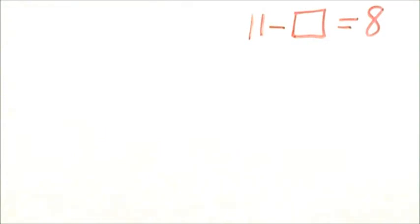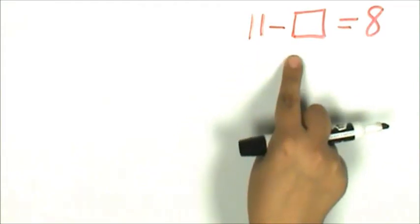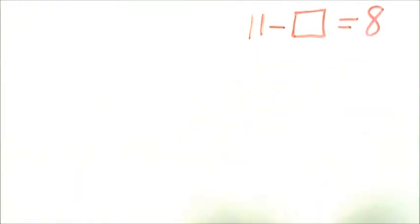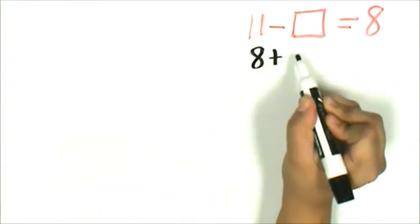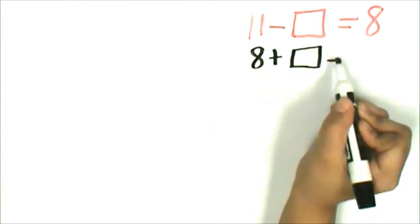Let's determine the number that represents the unknown in 11 minus an unknown equals 8. Let's use addition to figure out the unknown number. 8 plus the unknown equals 11.